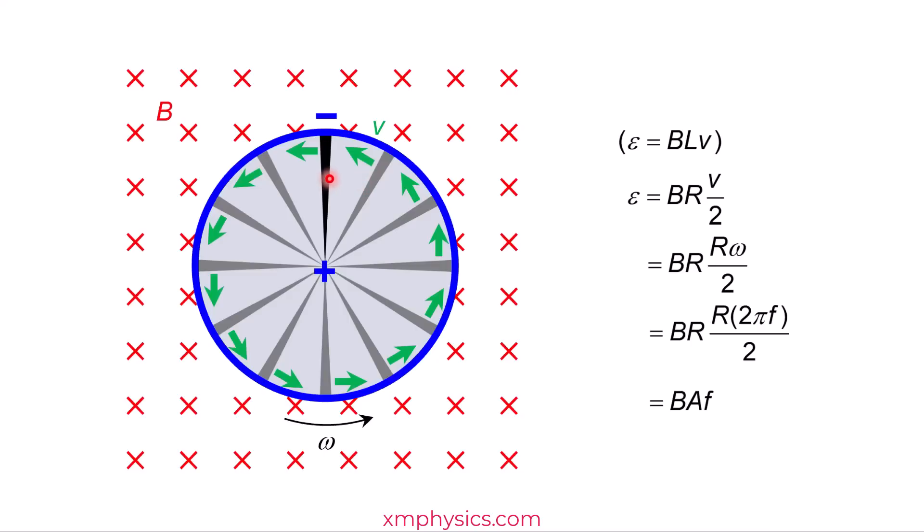So do we have to sum up the EMFs of all these wires? What do you think? The answer is no, we don't have to. You realize that all these wires are connected in parallel. So every wire is like a battery, and all these batteries are connected in parallel. So the final induced EMF is still just BAf, not many BAfs.